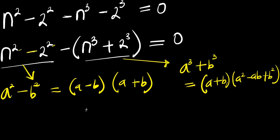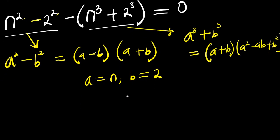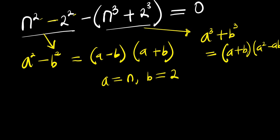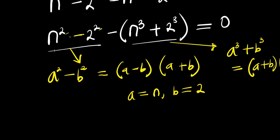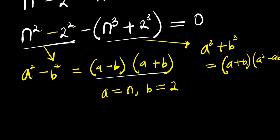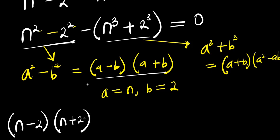In each of these, our a is n and b is 2. So we start with the first expression, making use of the difference of squares identity to expand. That means we have (n - 2)(n + 2), and there is a minus here.